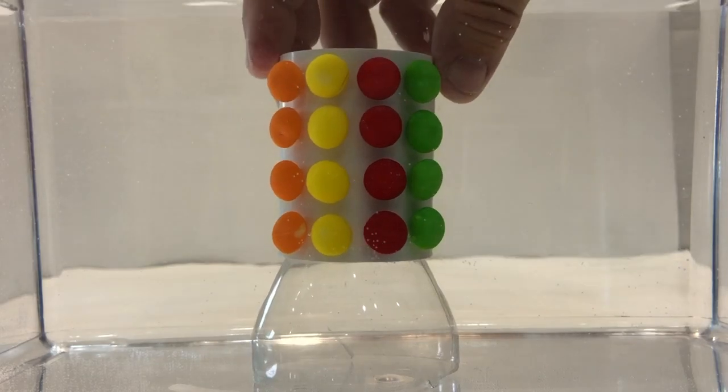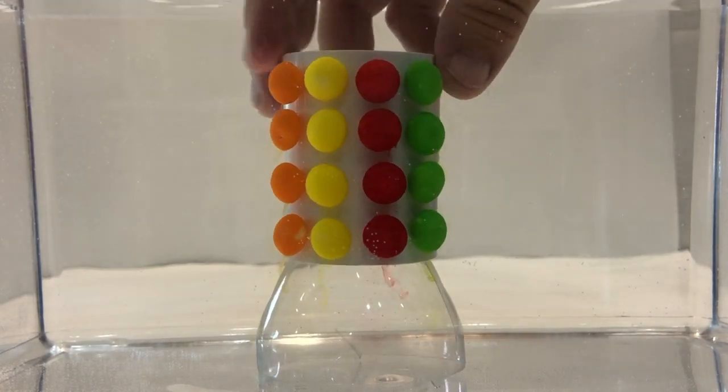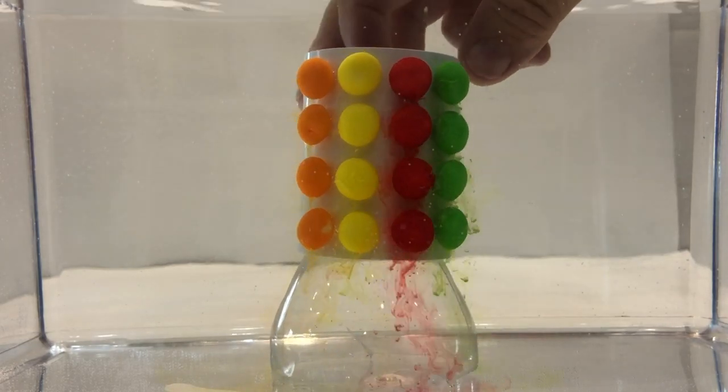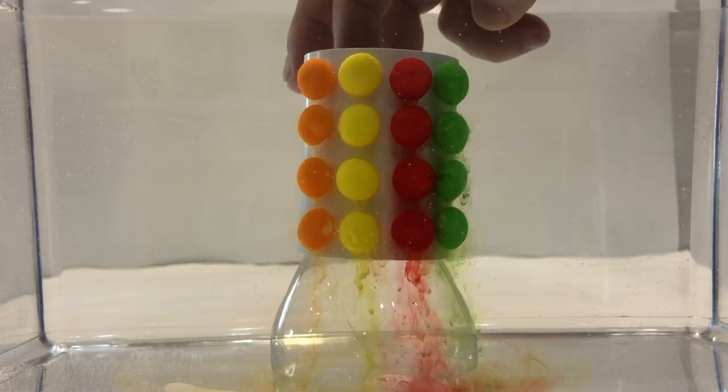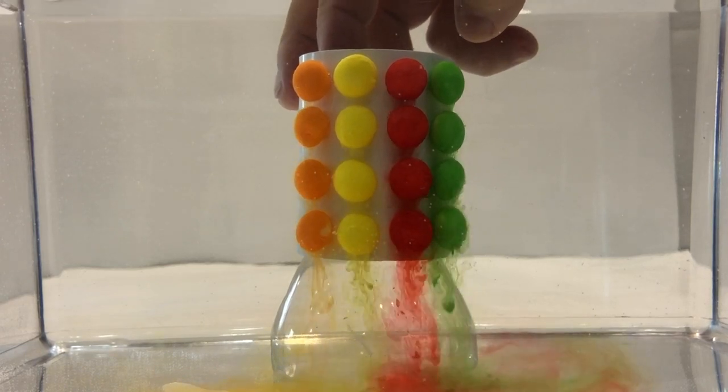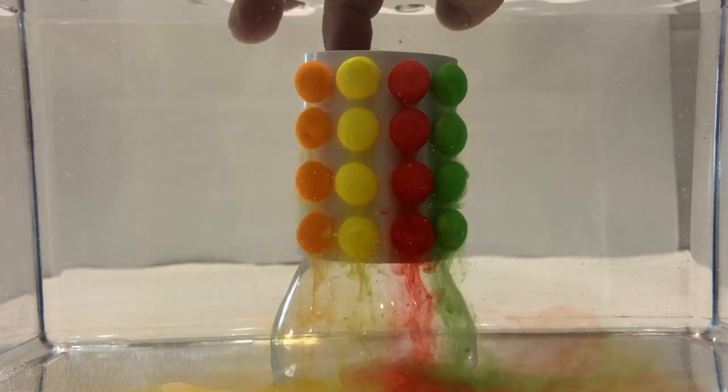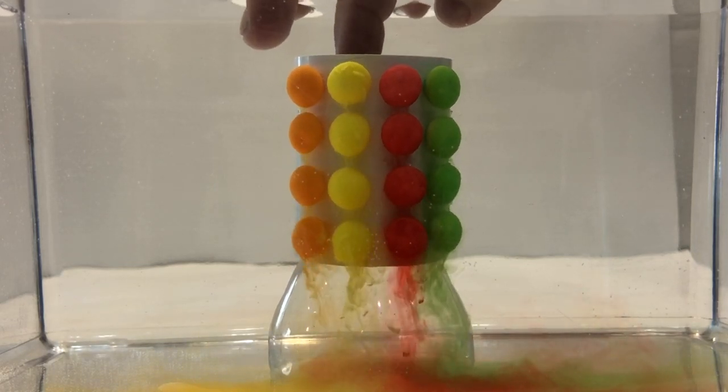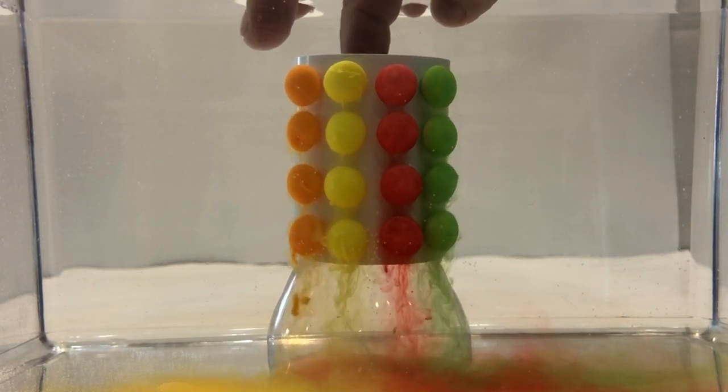So I decided to try this experiment one more time. But instead of using room temperature water, I used very hot tap water. As you can see, I did not balance the candy correctly and it wants to fall over, so I'm going to have to hold it this time. But you will notice that the food coloring and the coats of the candy are coming off very fast in the hot tap water, and the particles are moving extremely faster to the bottom of the tank.